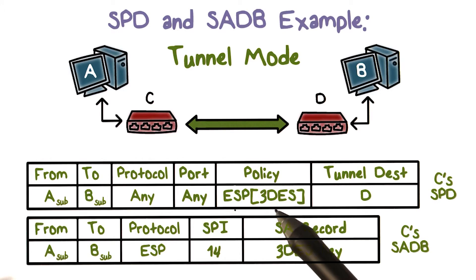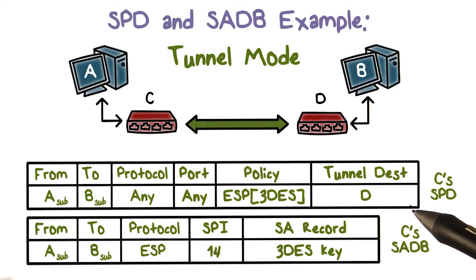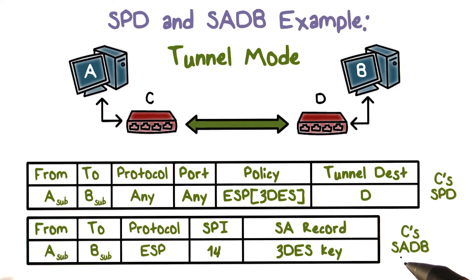And further, Triple DES is requested. Since C is the gateway of the subnet that A belongs to, C's SPD stores this policy, and its SADB stores the SA that has a Triple DES key and SPI for looking up the SA in D's SADB.